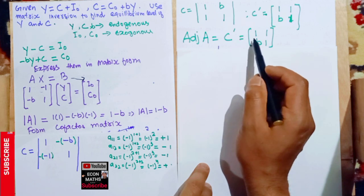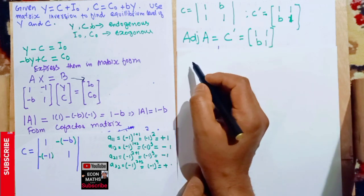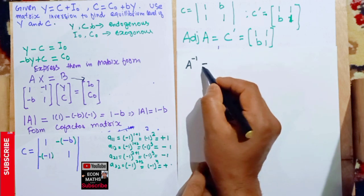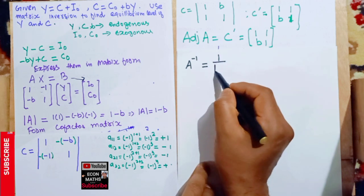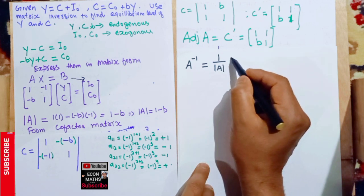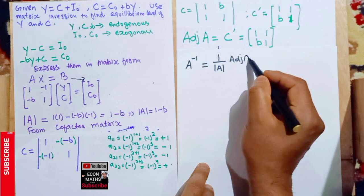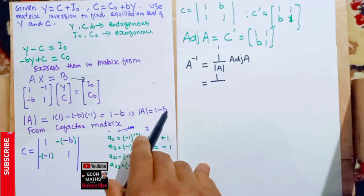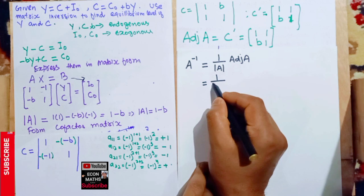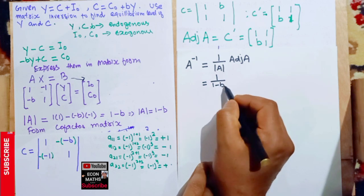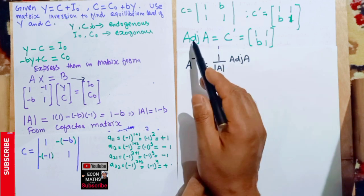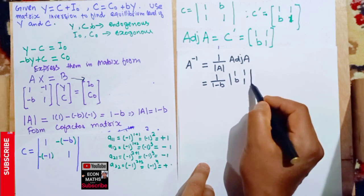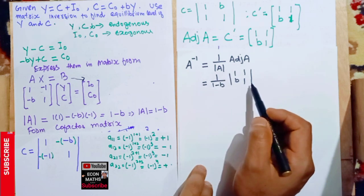The adjoint A equals the transpose of the cofactor matrix, which is [1, 1; b, 1]. The inverse is given by A⁻¹ = (1/det(A)) × adjoint A. Since our determinant is 1 − b, we have A⁻¹ = (1/(1−b)) × [1, 1; b, 1].